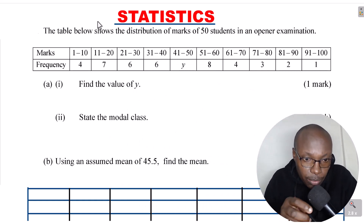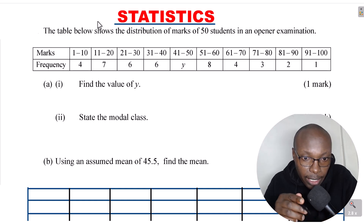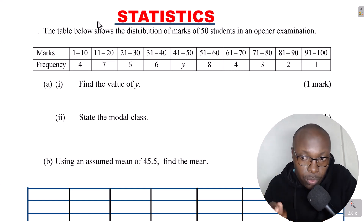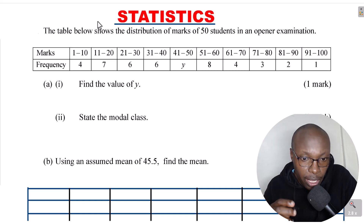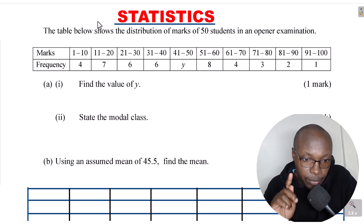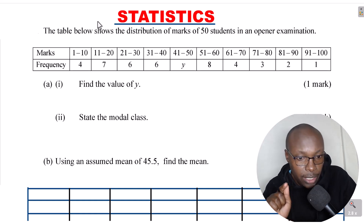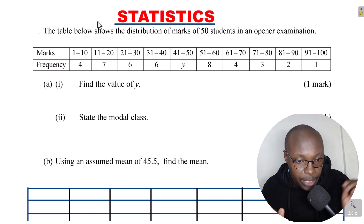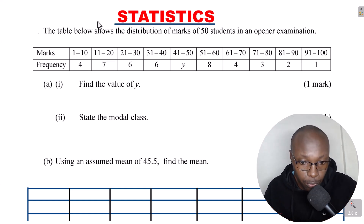The table is there. We have the marks. The classes are given: 1 to 10, 11 to 20, up to 91 to 100. Part 1: find the value of y. Part 2: state the modal class. Then part B: using an assumed mean of 45.5, find the mean.